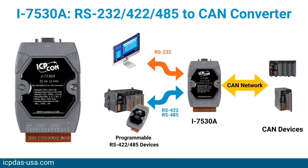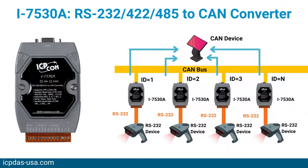The I-7530A is designed to unleash the power of CAN bus via RS-232, RS-485, and RS-422 communication methods. It accurately converts messages between these networks, letting you communicate with CAN devices easily from any PC or device with an RS-232, RS-485, or RS-422 interface.